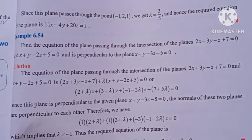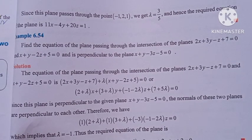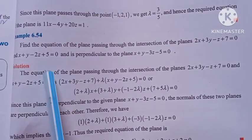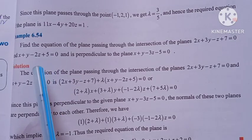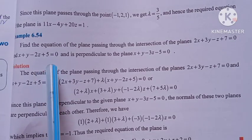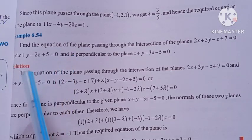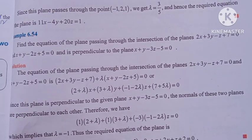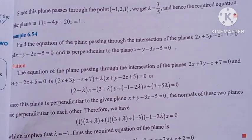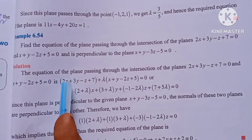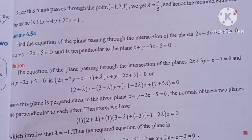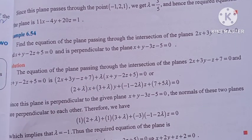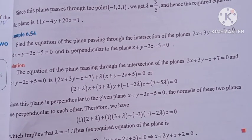Hi students, I am Vino. 12th Mark Chapter 6, example 6.54. Find the equation of a plane passing through the intersection of the plane 2x plus 3y minus z plus 1 equal to 0 and x plus y minus 2z plus 0, and perpendicular to the plane x plus y minus 3z minus 5 equal to 0.